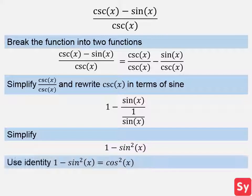Next we simplify and we get 1 minus sin²(x). Next, we use this identity. So we get cos²(x), which is our answer.